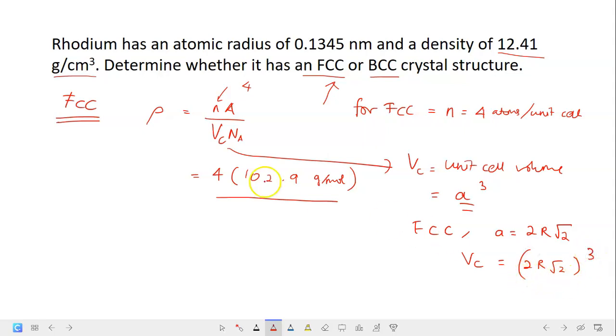So in this case, Vc for FCC is (2R√2)³. Just write this into the original equation, and then times the Avogadro number, which is 6.022 times 10²³ atoms per mole.